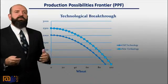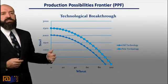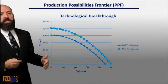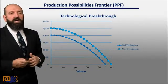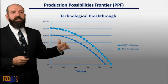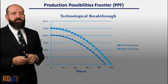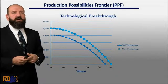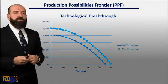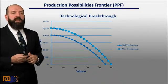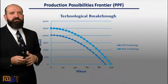However, if we go through a technological breakthrough, we can increase production of both steel and wheat, one or the other, or a combination of both, because at any given allocation, more is now possible. Technology is one of those components that allows us to produce more, produce better, and utilize our resources more efficiently.